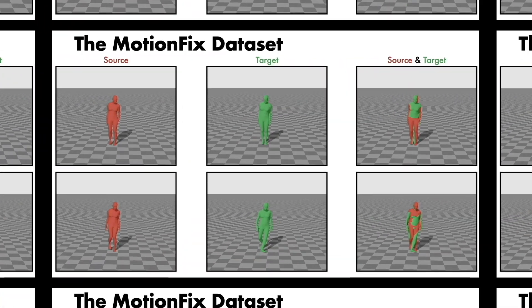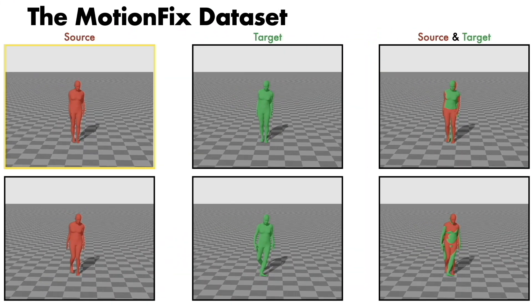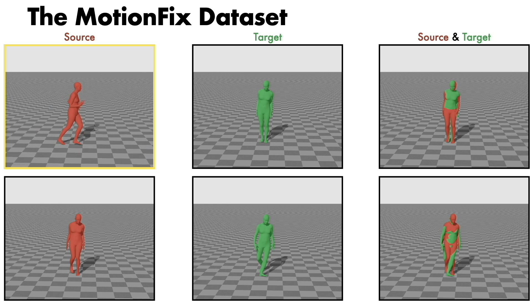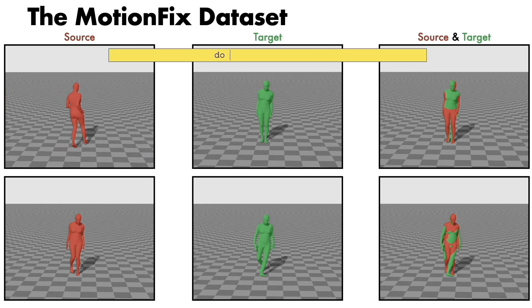MotionFix also includes triplets where the motion differs in terms of the overall trajectory, like do it in a wider arc.